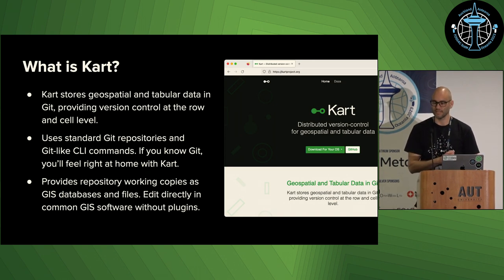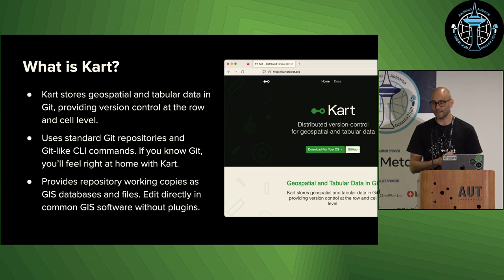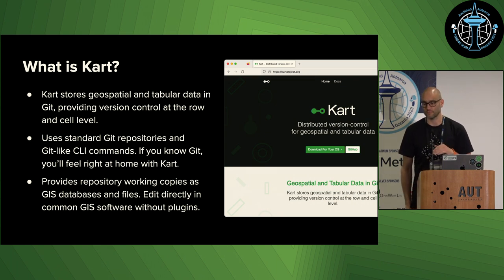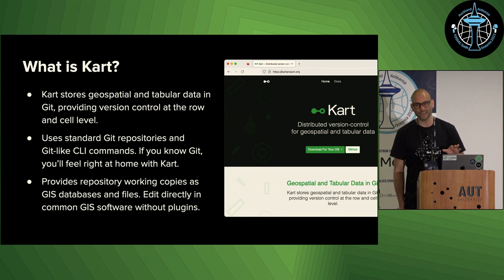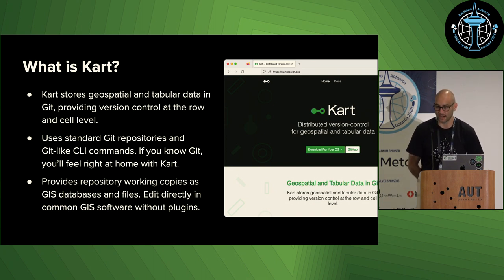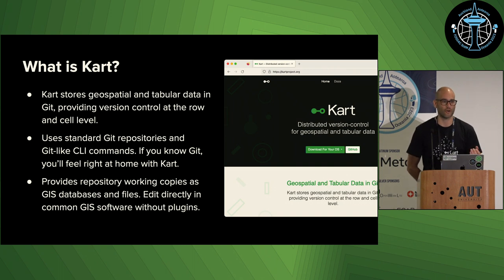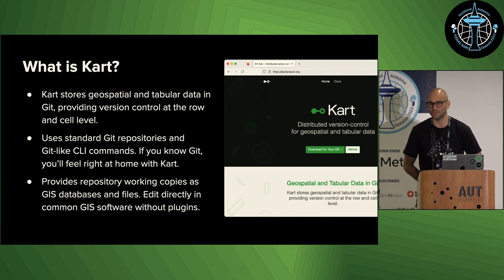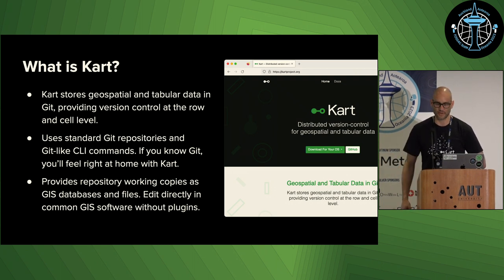So what is CART really? It stores geospatial and tabular data in a git repository and provides version control on a metadata, row, and cell level. It uses standard git repositories and git-like CLI commands, so if you're familiar with git or work in a CLI day-to-day, you'll find a pretty natural environment to work in. It provides repository working copies with standard GIS formats and allows you to directly edit those datasets from any common GIS software without plugins. We do also offer some software plugins that allow a bit of user interface if you want some help while using CART.